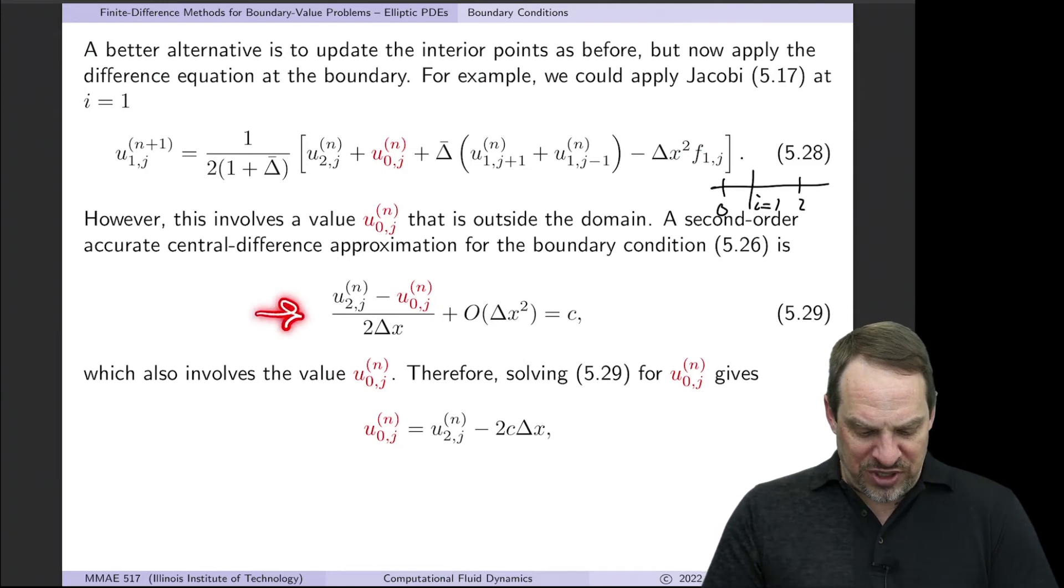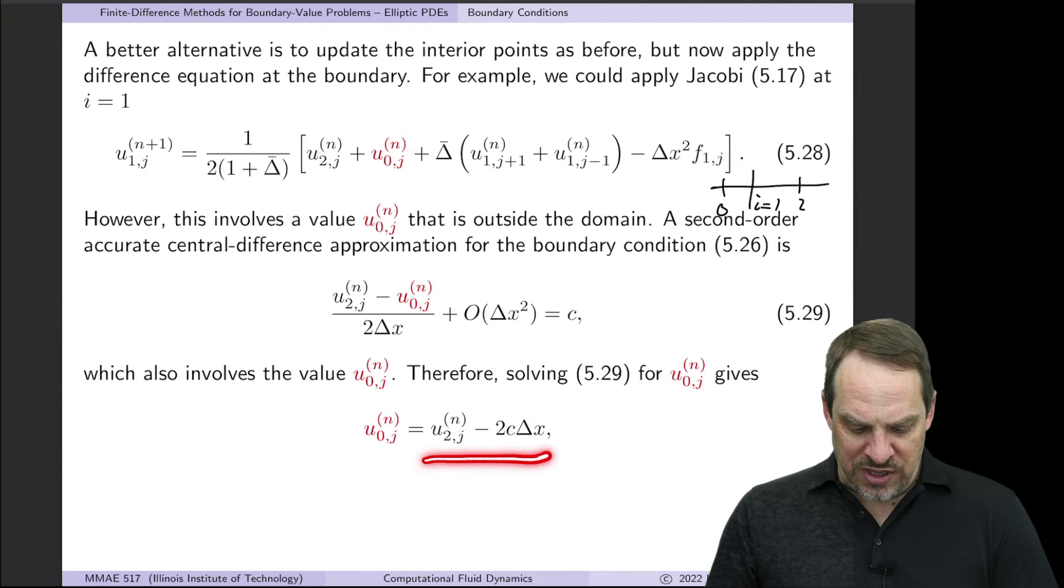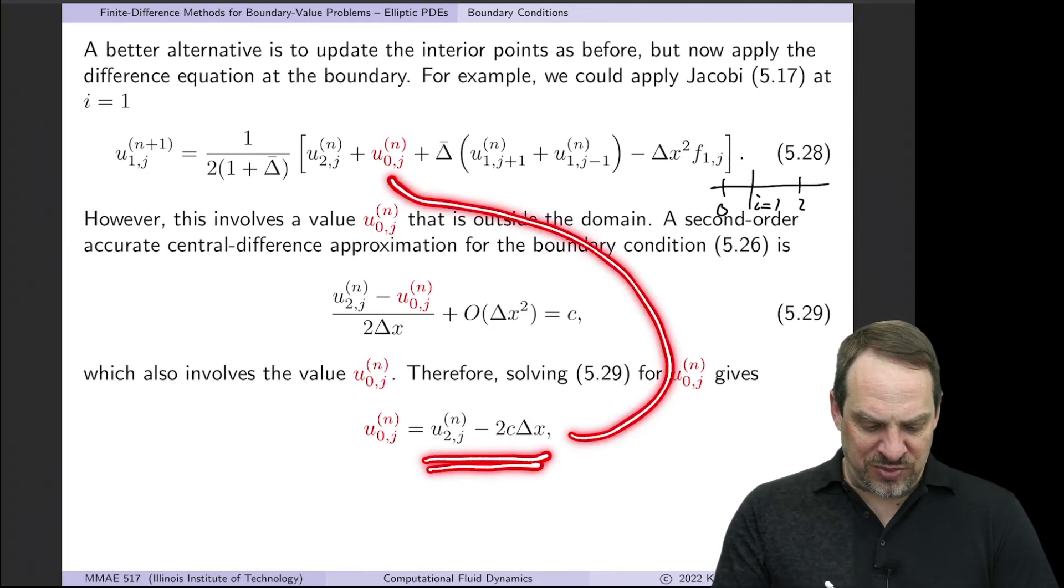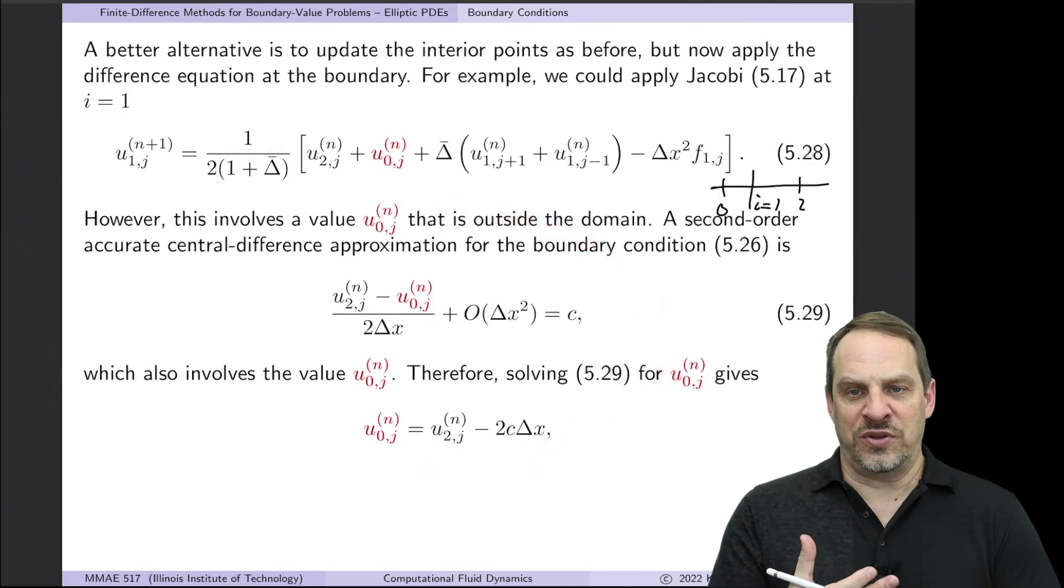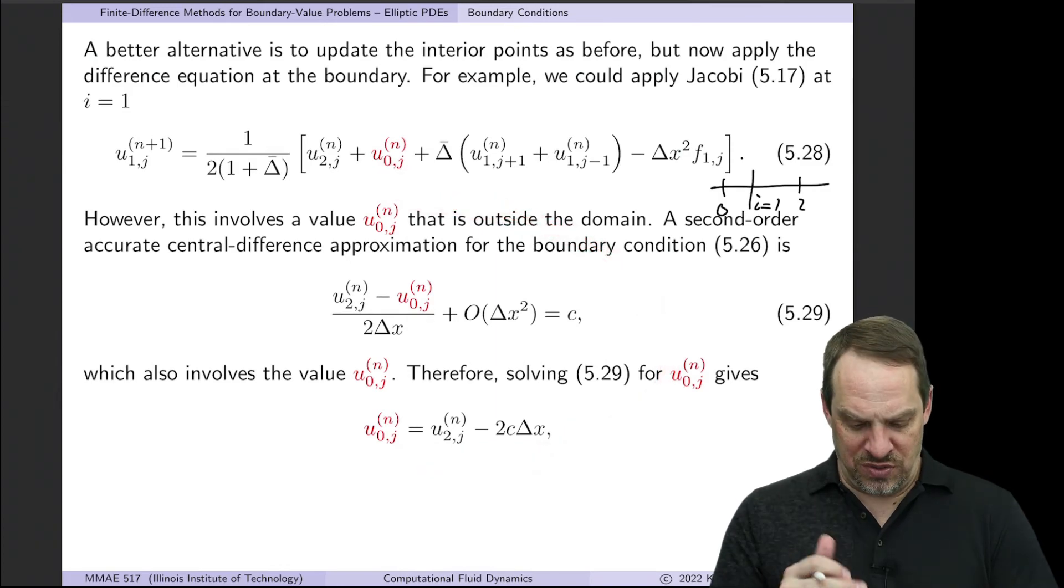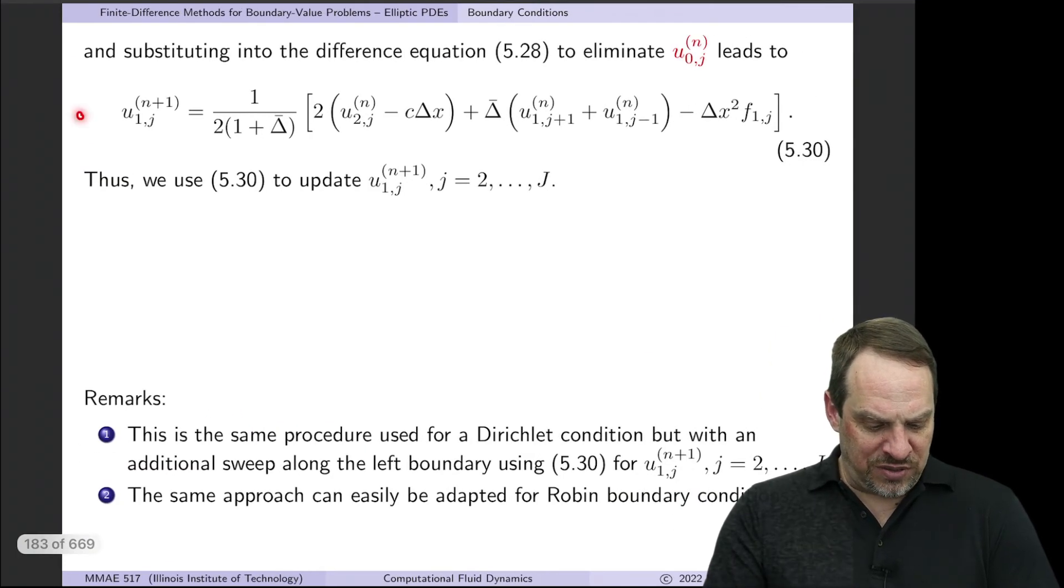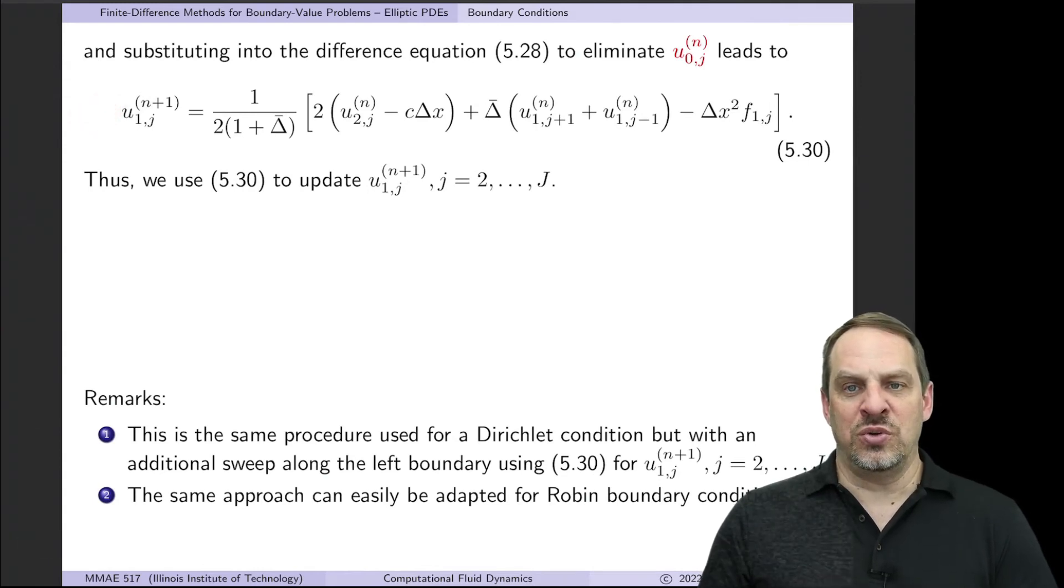So if we solve this expression for that value, U0J, we get an expression which we can then substitute back into here to eliminate the U0J in our difference equation. And that's exactly what we do. So what we get is the following. So this is our equation for U1J.